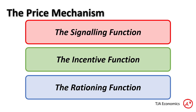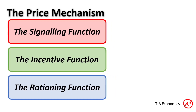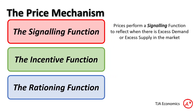So the first of those, the signalling function — what does that do? The signalling function reflects when there is excess demand or excess supply in the market, and it reflects that with a signal, some sort of way of showing us that there is too much demand or too much supply in the market.